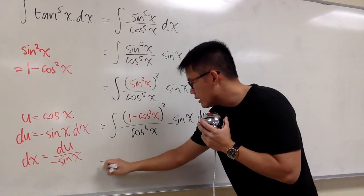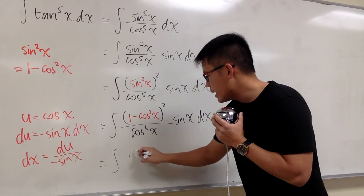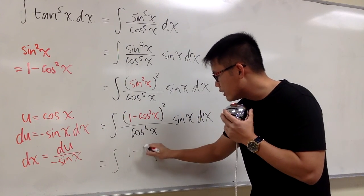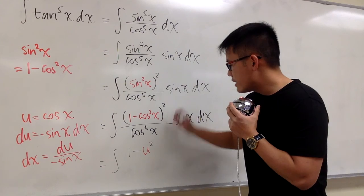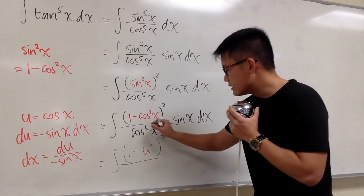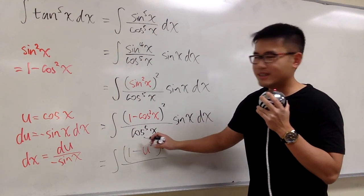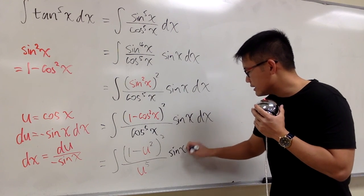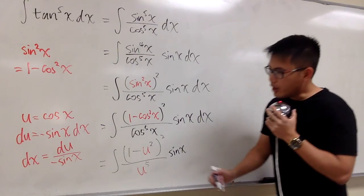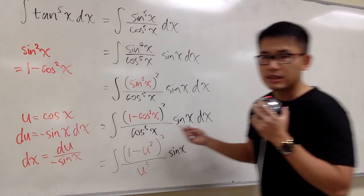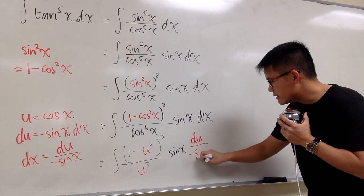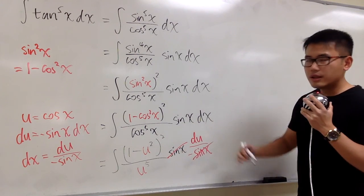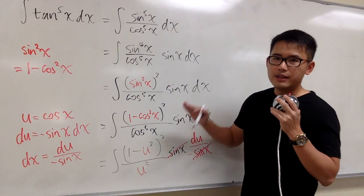After substituting, we have the integral of (1 minus u squared) to the second power, over u to the fifth power, times sine x, times du over negative sine x. The sine x and negative sine x cancel out, so we have taken this integral completely into the u world. Be sure you carry that negative sign — let me take it to the outside.